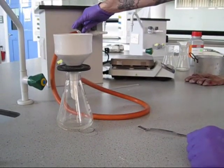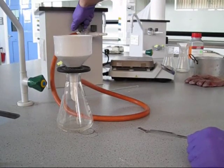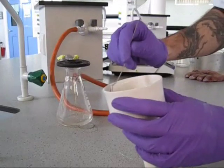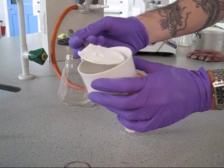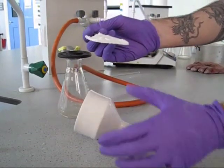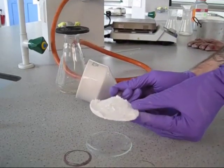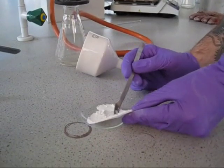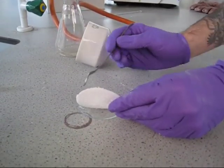Once the product has been filtered, turn off the vacuum, take off the funnel and remove the filter paper. Scrape the crystals from the filter paper onto a watch glass. Remember to put your name on the bottom of the watch glass so you can identify it later.